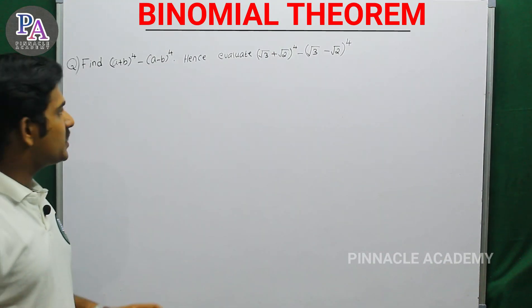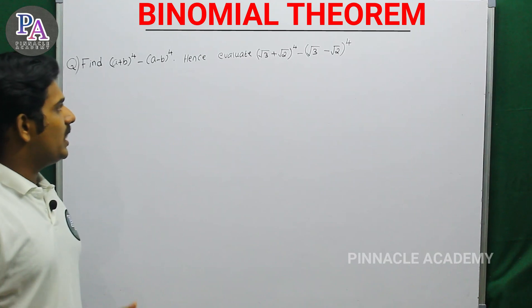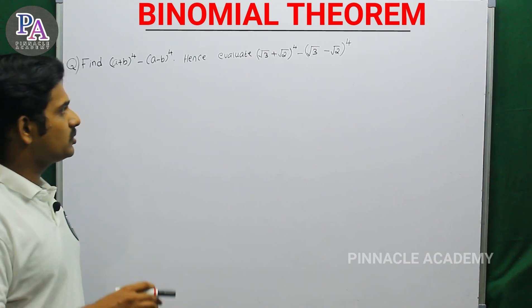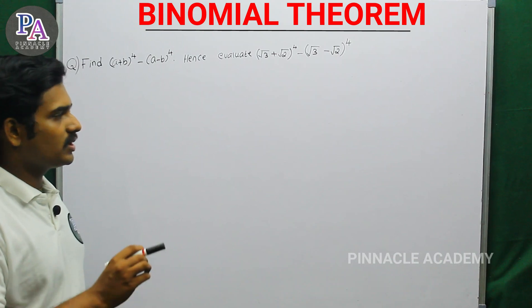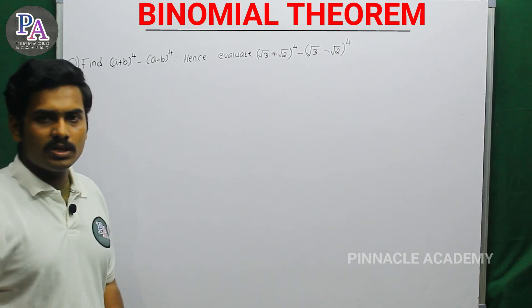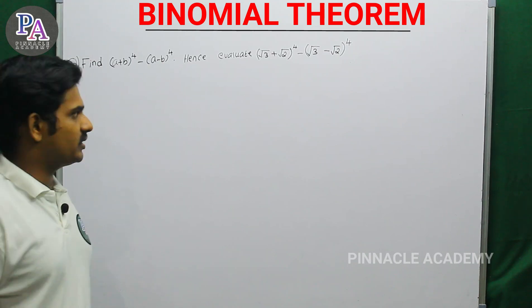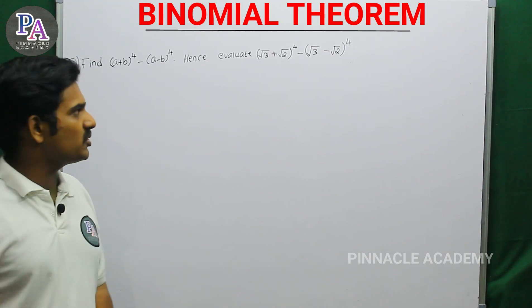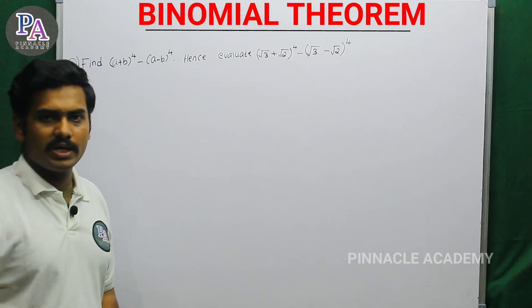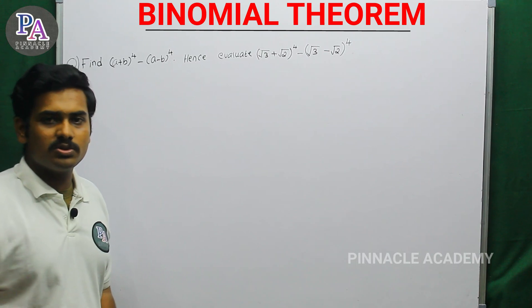Find (a plus b) the whole raise to 4 minus (a minus b) the whole raise to 4. Hence, evaluate (root 3 plus root 2) the whole raise to 4 minus (root 3 minus root 2) the whole raise to 4. We will talk about this important question. We will expand using the binomial theorem.